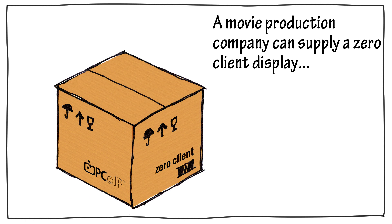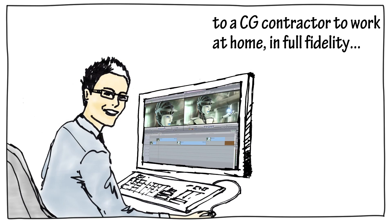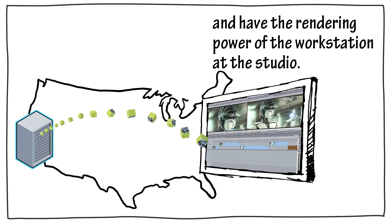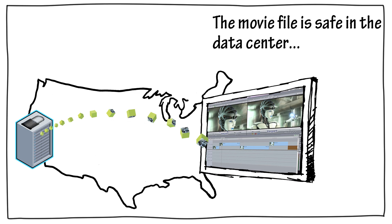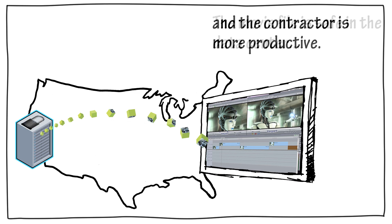Using PCoIP, a movie production company can supply a zero-client display to a CG contractor to work at home in full fidelity, and have the rendering power of the workstation at the studio. The studio knows the movie file is safe in the data center, and the contractor is more productive.